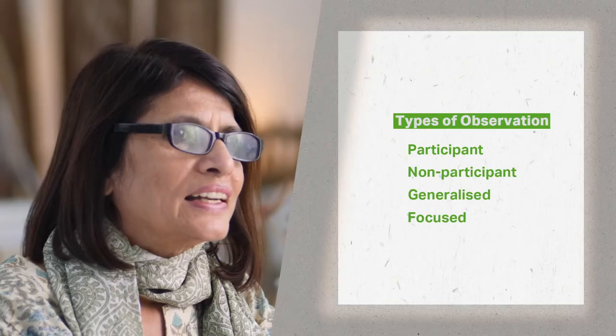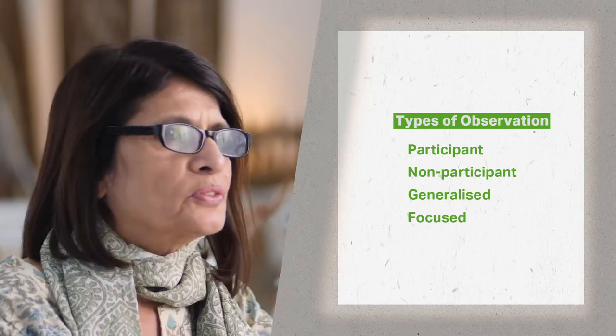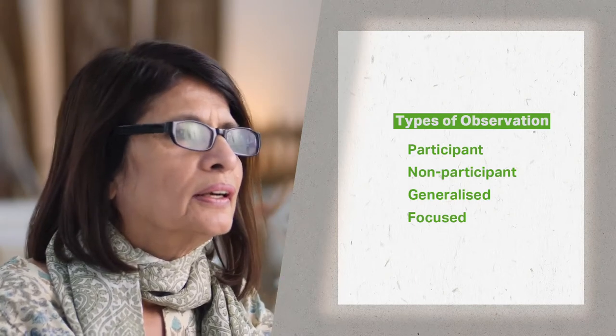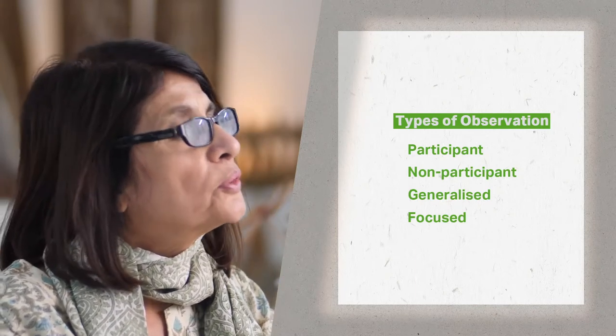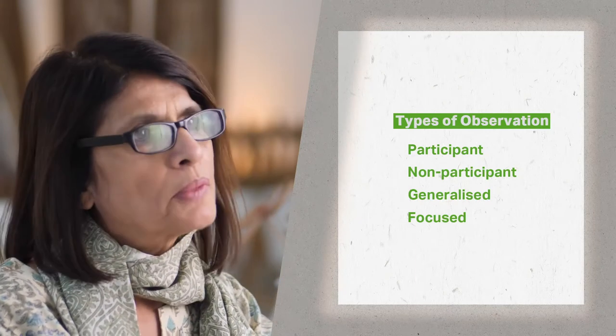How do we do ethnographic observation? Let us discuss the different types of observation. Each of these requires a different way of going about it. In participant observation, we join our participants, taking up a role of sorts and getting involved in the activities that form the phenomena we are studying.